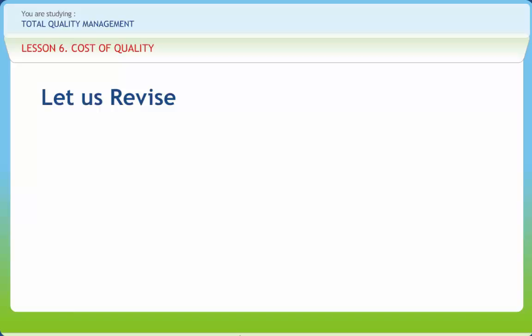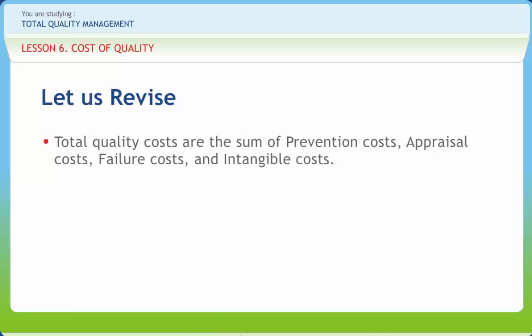Before we end, let us briefly revise what we have studied so far. Total quality costs are the sum of prevention costs, appraisal costs, failure costs, and intangible costs.